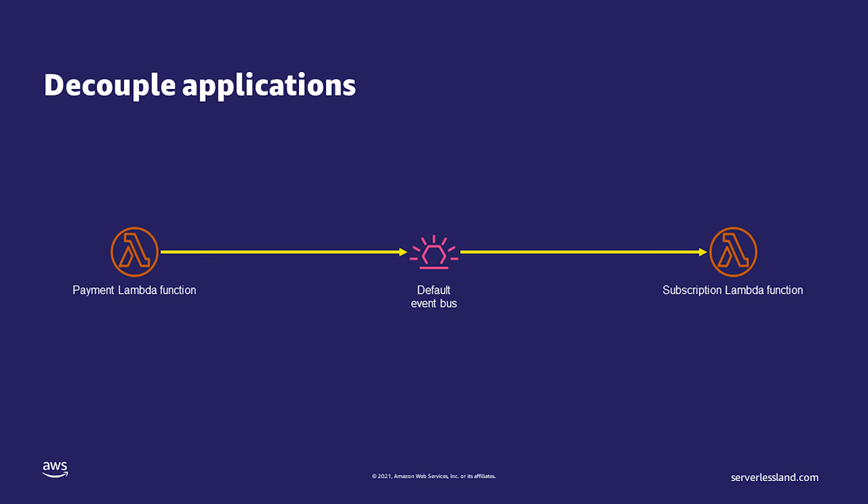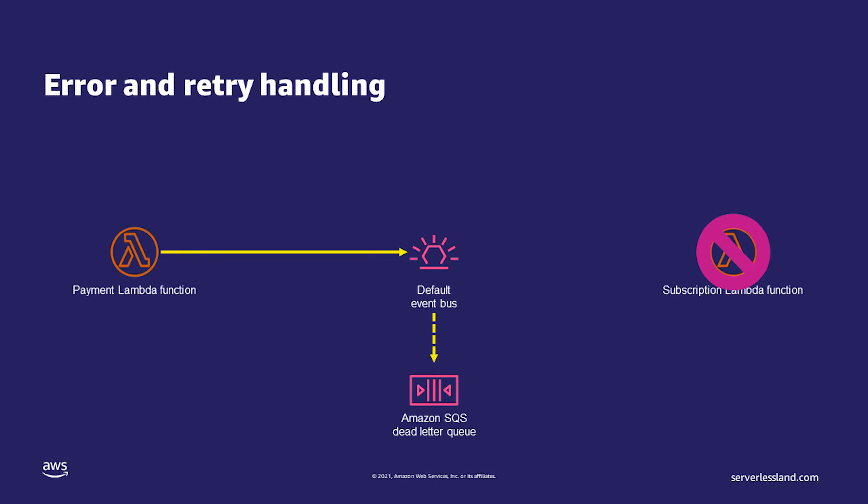A better option is for the payment service to drop a request on the EventBridge bus requesting a subscription to be created. If the subscription Lambda function fails or is unavailable, the payment Lambda function can still go about its business. This brings about another feature of Amazon EventBridge: if a target service fails, EventBridge can be configured to retry after a certain period of time. If the process still continues to fail, the event can be dropped into a dead letter queue for troubleshooting as needed.